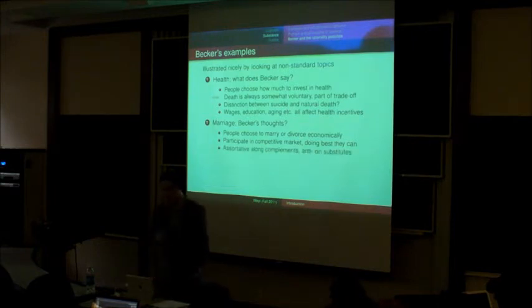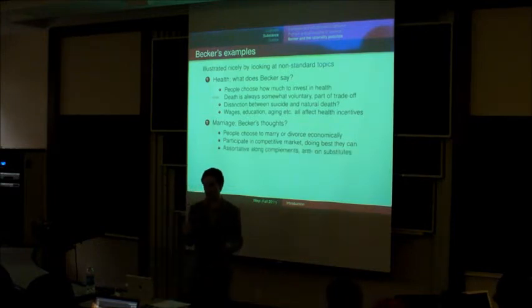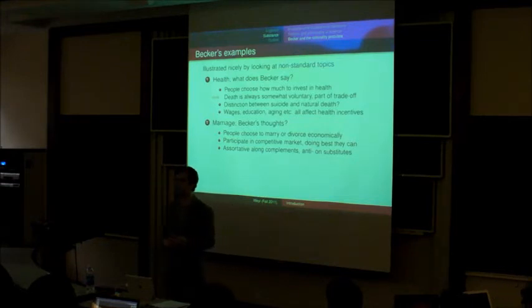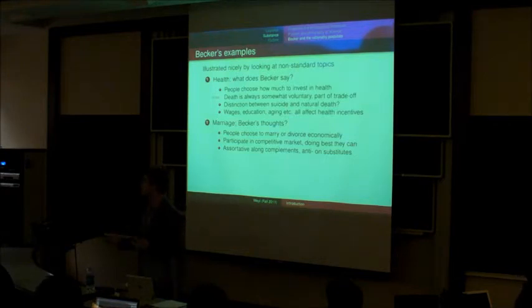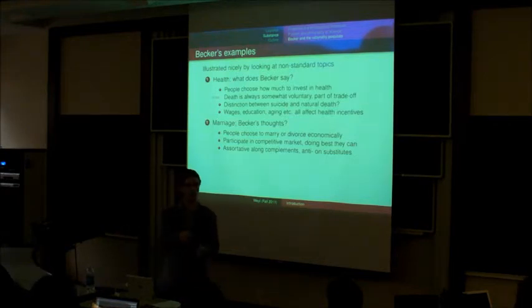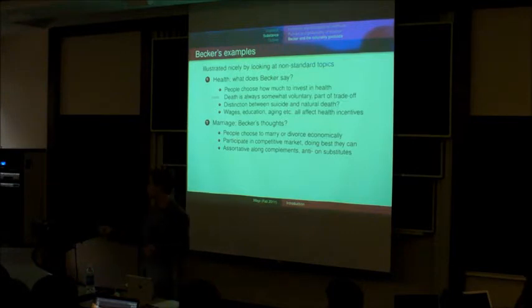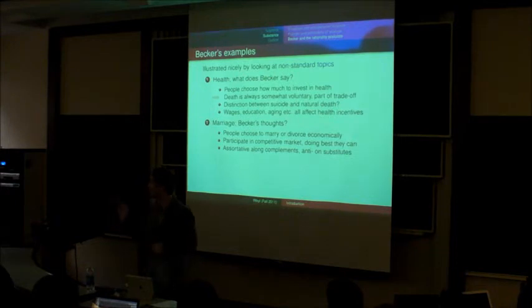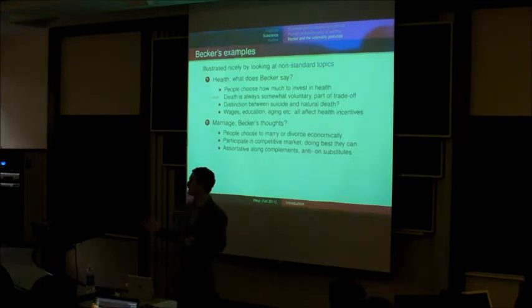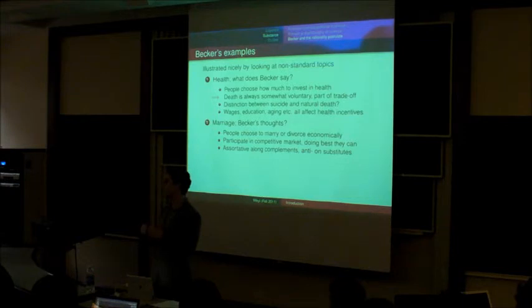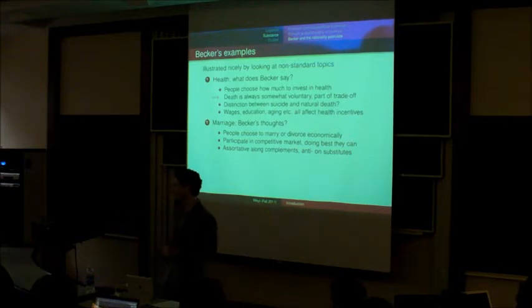And that we should expect to see that along dimensions where you would think that within the couple, there would be complementary things. For example, education. We think that people like to be with other educated people because educated people like talking about things, so we would expect that more educated people would marry other more educated people. But then controlling for that, money is probably a substitute because people have concave utility of consumption. And so you would think that people, given their education, would marry people with quite different incomes from them. And these are exactly the sorts of predictions we see borne out in data.